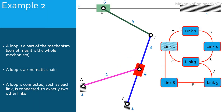In this quick-return mechanism there are two loops. Links 1, 2, 4, and 3 make the first loop. Links 1, 3, 4, and 6 make the second loop.